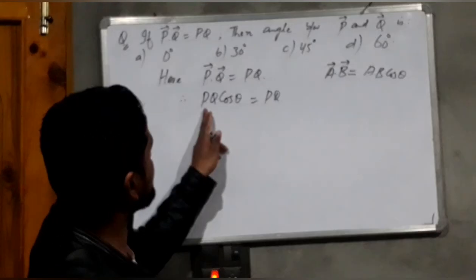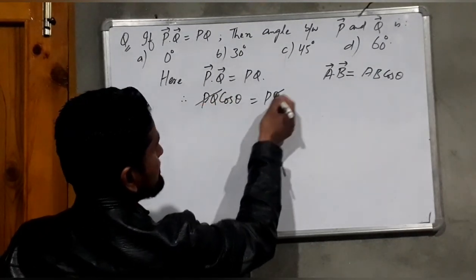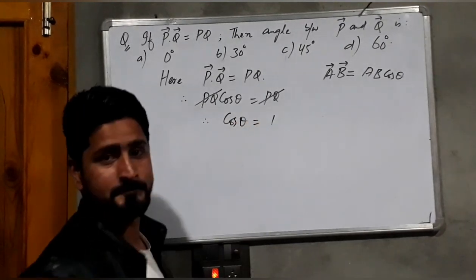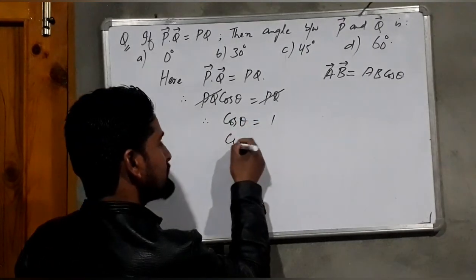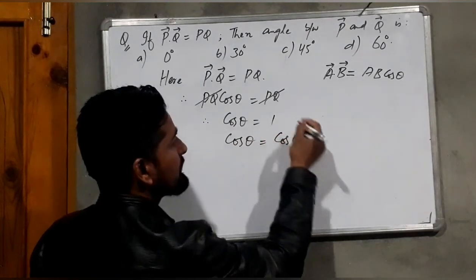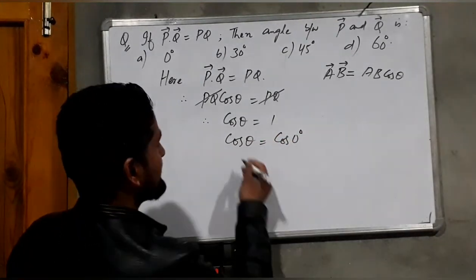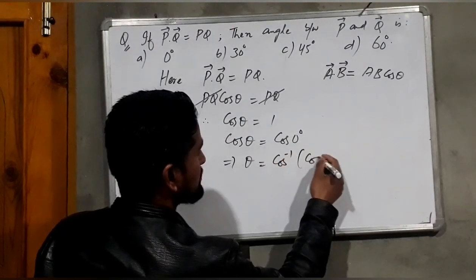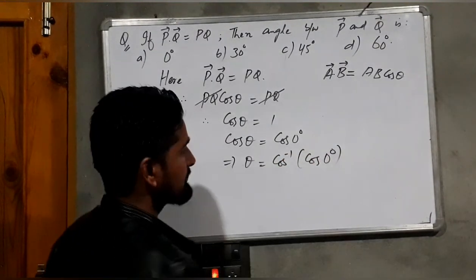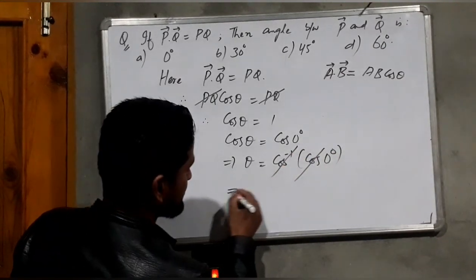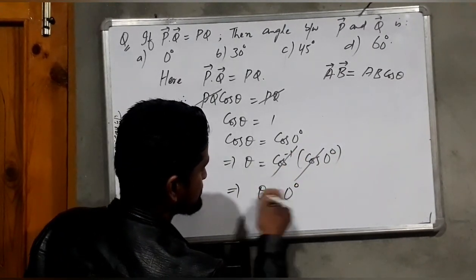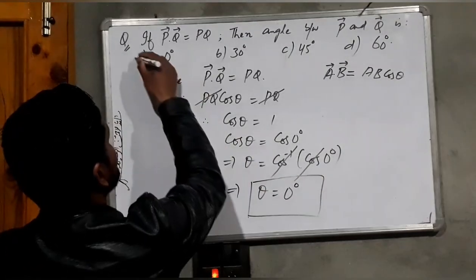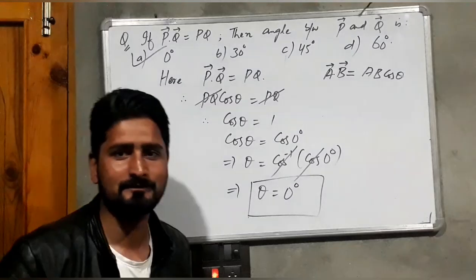PQ on both sides cancels, so cos(θ) equals 1. Cosine equals 1 when the angle is 0°. Therefore θ equals cos⁻¹(1), and cos and cos inverse cancel, implying θ equals 0°. So option A is again the correct answer — 0°. Thank you for watching this video.